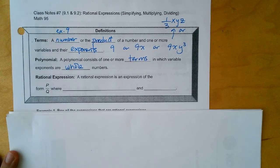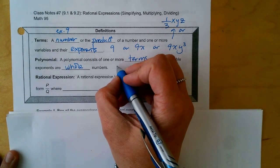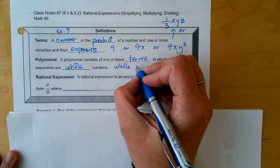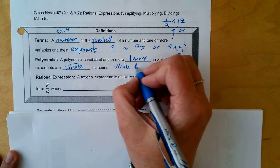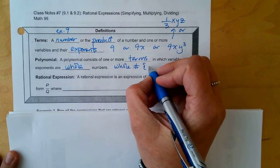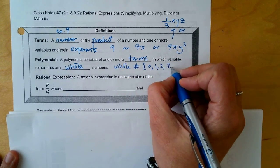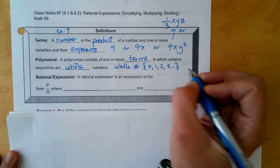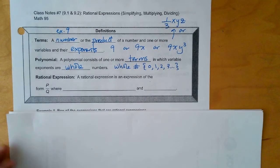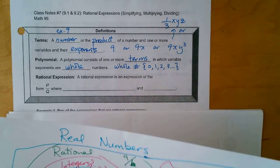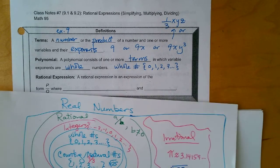Do we remember what whole numbers are? Whole numbers are 0, 1, 2, 3, and so on — that's the set of whole numbers. So all of the exponents have to be positive; they could be 0, but they can't be fractions. We were just talking about rational exponents, and those are not whole number exponents.